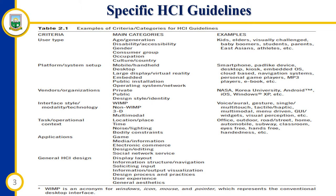We have WIMP — an acronym for Windows, Icon, Mouse and Pointer — which represents the conventional desktop interface. In most desktop applications, we will see a window, and within the window we can see icons, possibly on the desktop. We can also see the movements of the mouse and the different types of pointers available for our application.